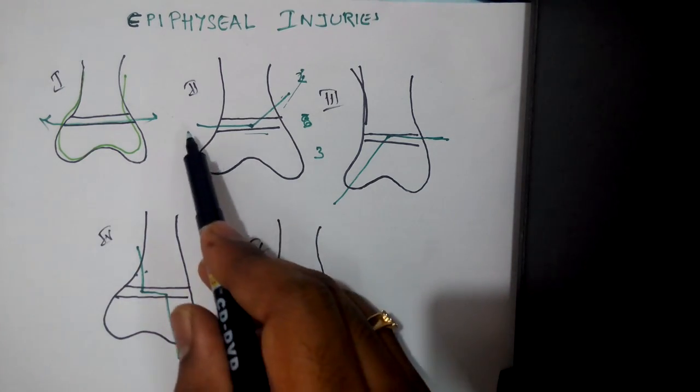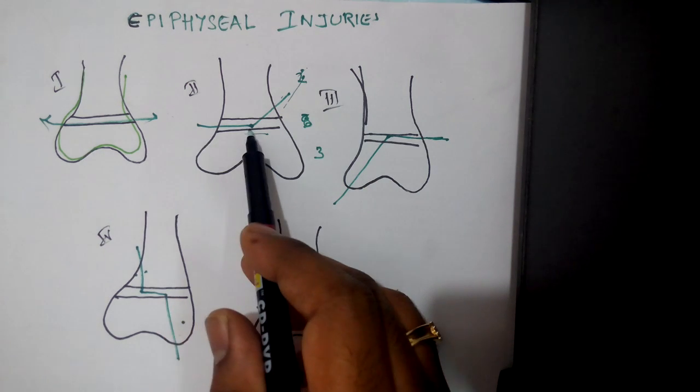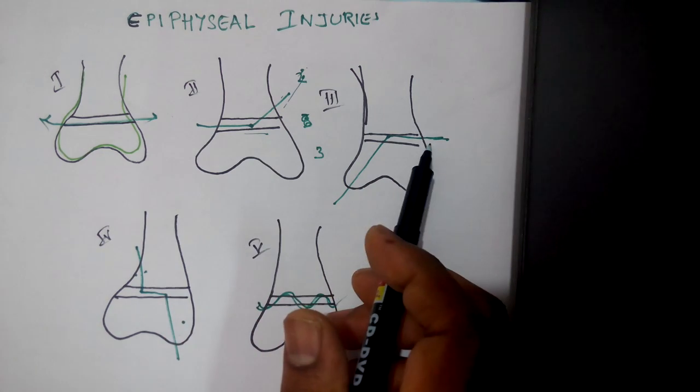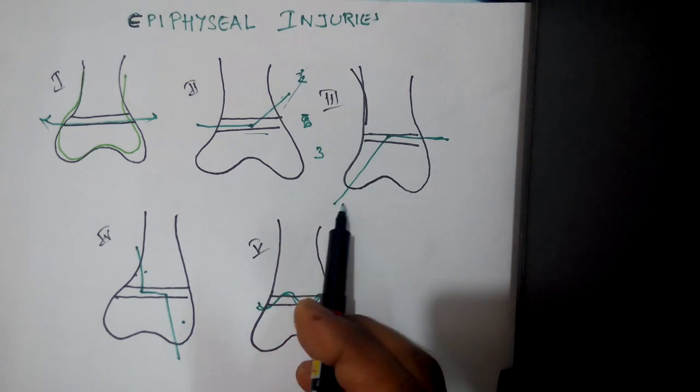Type 1 Salter-Harris is just a number 1 lying horizontally over the physis. Type 2 and type 3: because 2 is above, the fracture line goes up after traveling a distance in the physis. And 3, because the line number 3 comes down, the fracture line comes down.